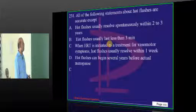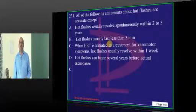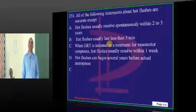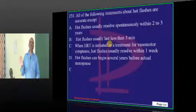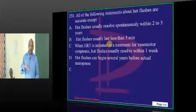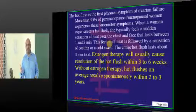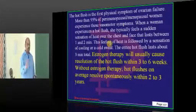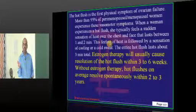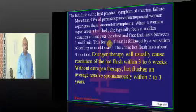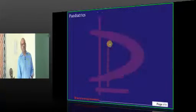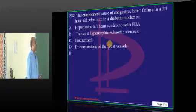Coming to hot flashes — if you don't give any hormone replacement therapy, when will menopausal hot flashes resolve? If you give HRT, it generally takes 3 to 6 weeks to resolve. If you don't give HRT, within 2 to 3 years they resolve on their own. That is a point which we need to appreciate.